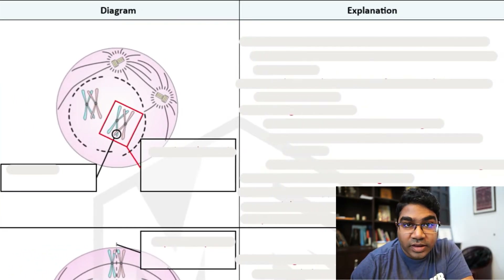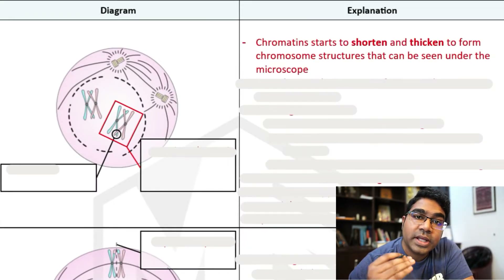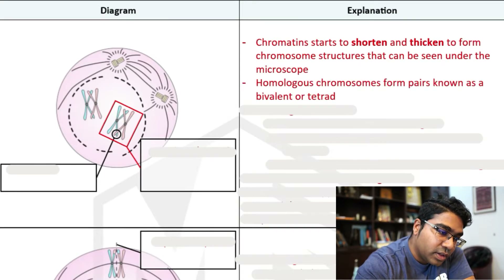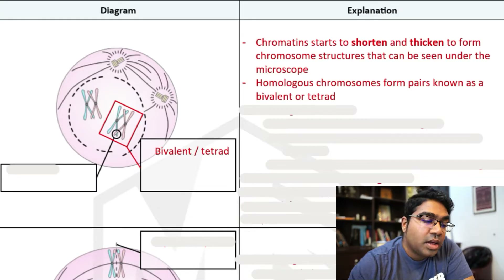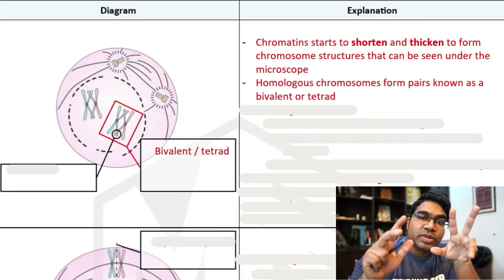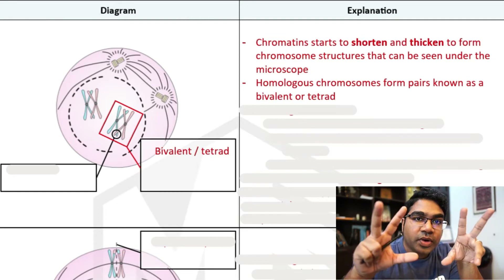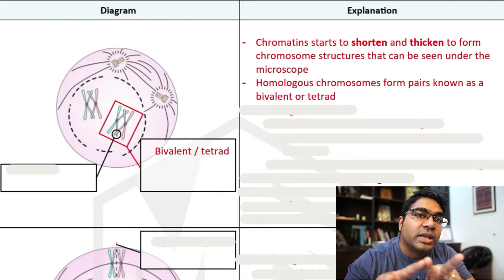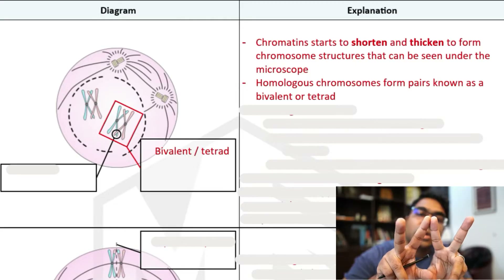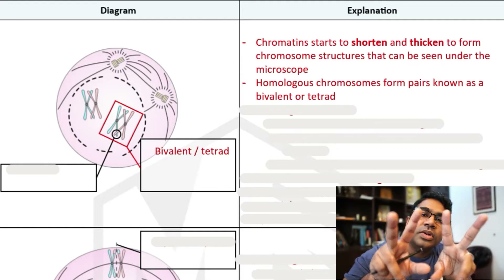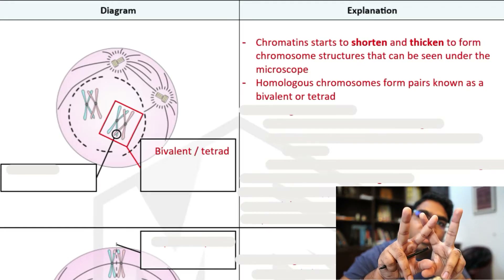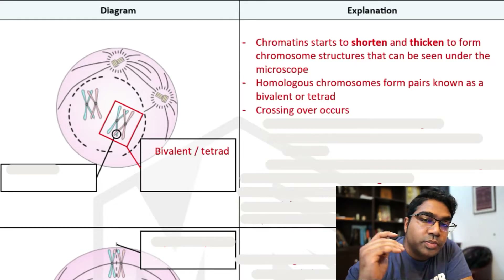In prophase 1, just like in prophase, the first thing that happens is the chromatins will start to shorten and thicken so that they're visible under the microscope. Then something unique to prophase 1 occurs: the homologous chromosomes will start to form pairs, known as bivalents or tetrads. This process of forming the pair is known as synapsis. And when they form a pair, a sister chromatid from each of the chromosomes will cross over — this process is called crossing over. This is unique only to prophase 1.